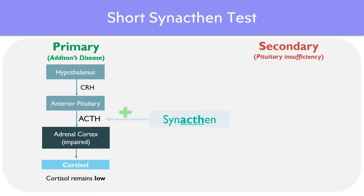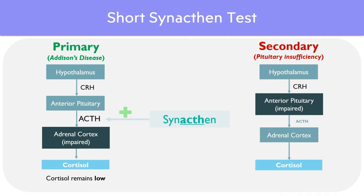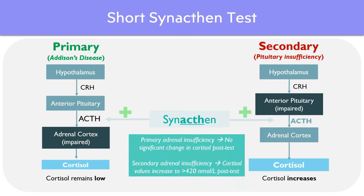Comparing this with a secondary cause such as pituitary insufficiency, the pituitary gland is releasing less ACTH than normal. So when we administer synactin, it returns the ACTH within normal range, and the cortisol levels also go up. In other words, the short synactin test can help to differentiate between primary adrenal insufficiency and secondary adrenal insufficiency, depending on the cortisol values after the test.